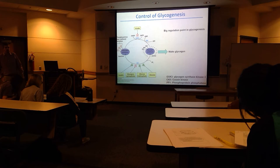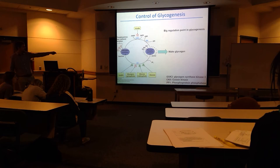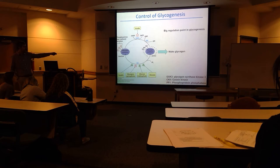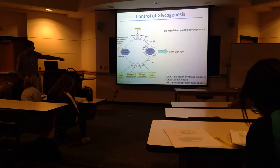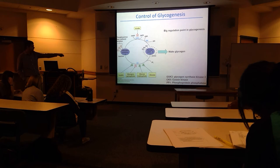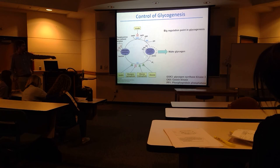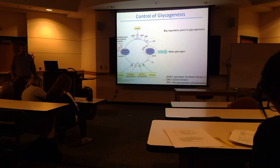High insulin levels will inhibit GSK3 kinase — the kinase that normally phosphorylates glycogen synthase to make it inactive. So when insulin levels are high, you have active glycogen synthase, meaning you make glycogen. There is also a phosphatase PP1 that removes phosphorylation from glycogen synthase and is activated by insulin. Glucagon and epinephrine inhibit this phosphatase, ensuring the inactive form is dominant when those hormones are present.